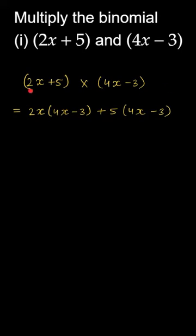Plus 2x into 4x which will be 8x squared, then multiply, then simplify 2x into minus 3, 5 into 4x, plus 5 plus or minus, minus 5 into 3.